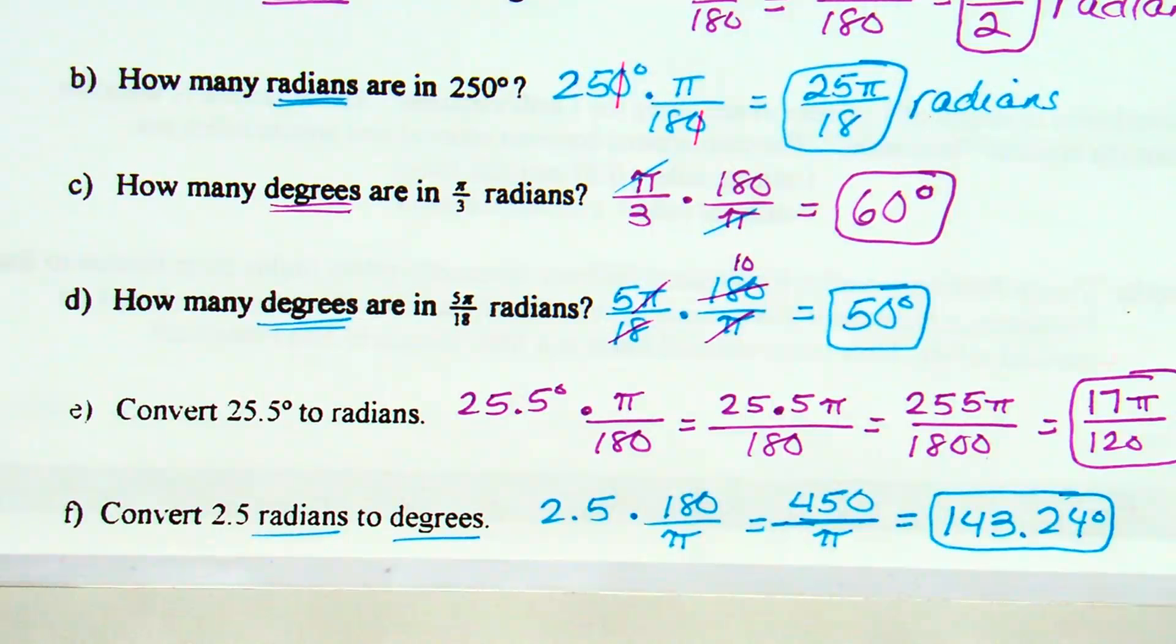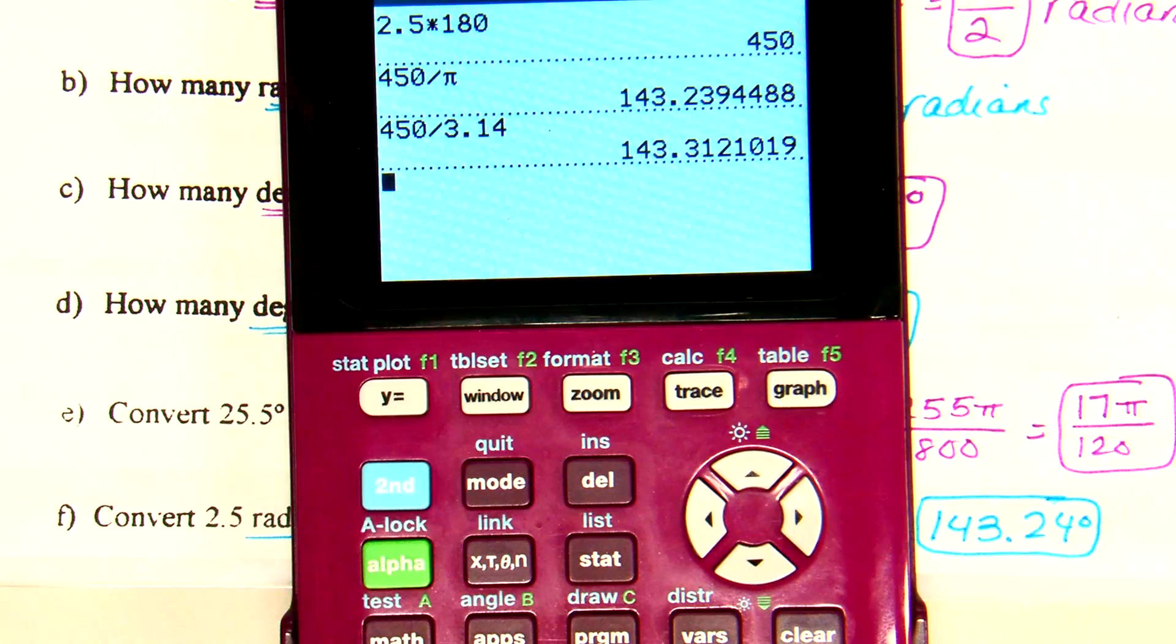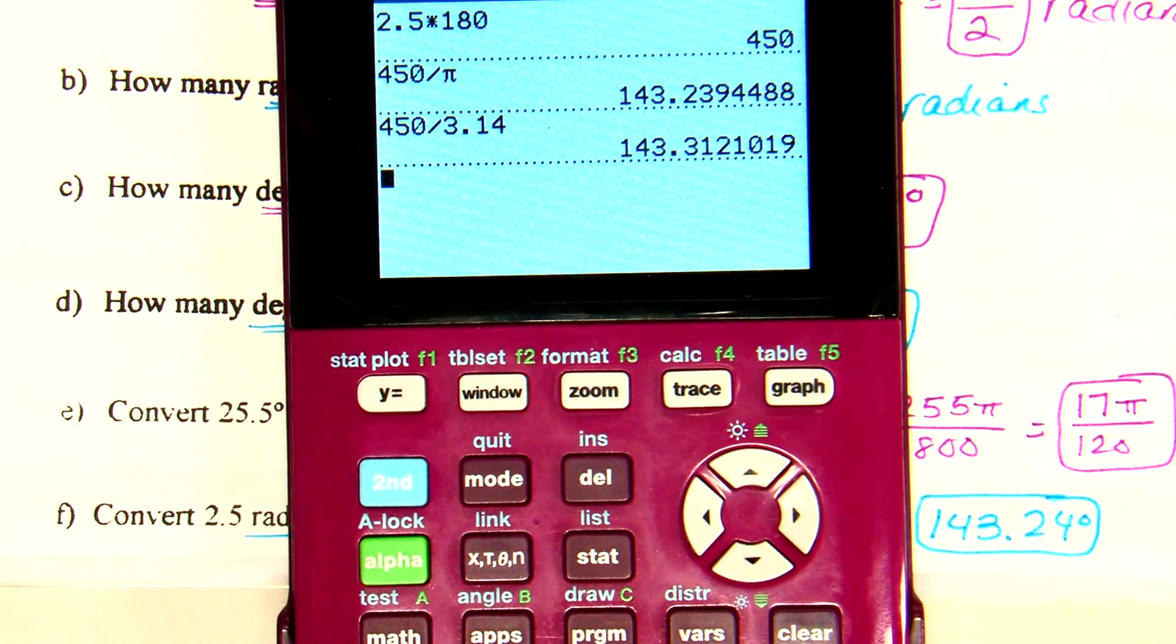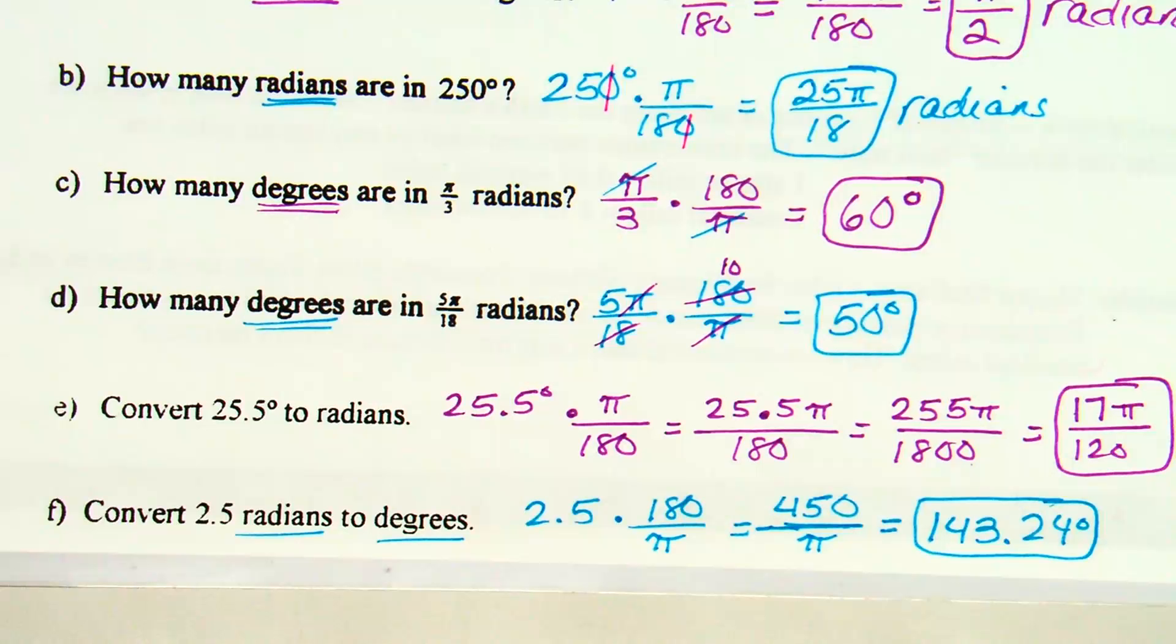So 450 divided by pi ends up being, I have 143.24 degrees written down. And that's because it's a degrees answer. Typical degrees answers, you don't want to put a pi in there. Probably the pi button. I would recommend using the pi button. So here's for comparison's sake. If I use the pi button, it's 143.2394488. If I use 3.14, 143.312.